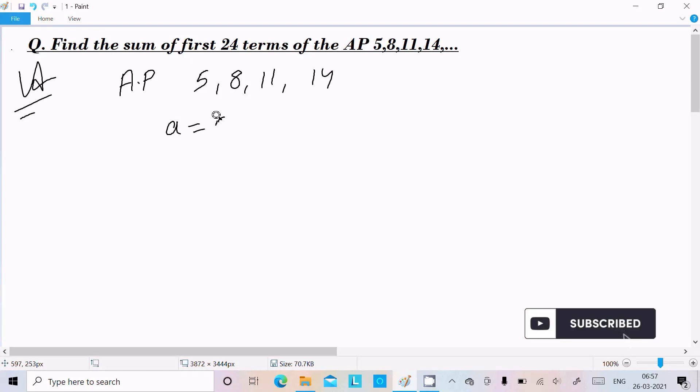...is 5, and the common difference is 8 minus 5, which equals 3. So the common difference is 3. Now you can easily calculate the common difference using the a_n - a_(n-1) formula. Suppose we give n the value 2...